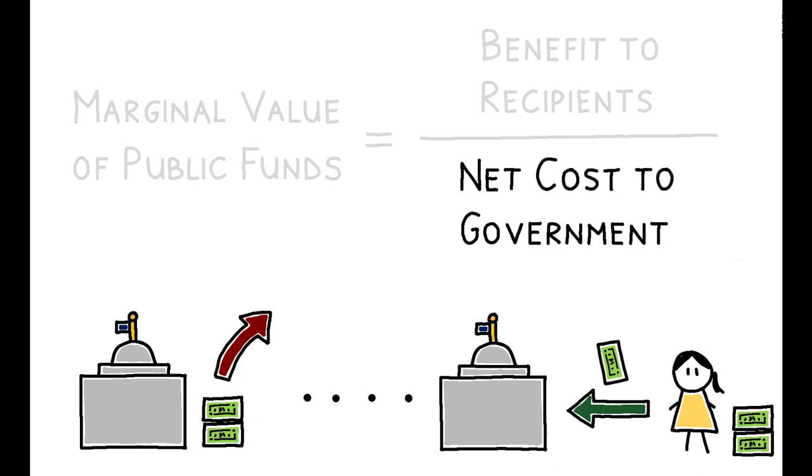If these long-run effects are large enough to fully offset the initial cost, the policy pays for itself and the MVPF is infinite.